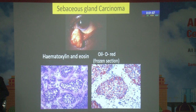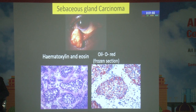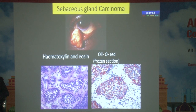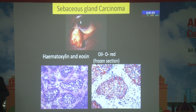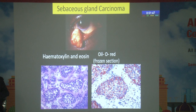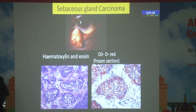In sebaceous gland carcinoma, you will see foamy cytoplasm within the tumor cells, and on oil red O stain in frozen section, the fat lobules within the malignant cells appear as a red color.